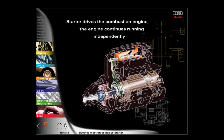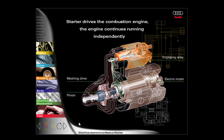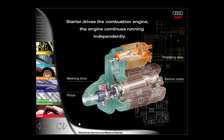The starter is the largest electrical consumer in a motor vehicle. Its task is to drive the combustion engine to such speeds that it is able to continue running independently. The starter withdraws the energy required to achieve this from the battery. The starter is predominantly comprised of an electric motor, an actuating relay and a meshing drive with a pinion. When the driver turns the ignition key, the actuating relay picks up, starting the starter motor and simultaneously moving the meshing drive. The pinion engages in the engine flywheel's ring gear and rotates it. When the engine starts, the one-way roller clutch withdraws the engaged pinion from the starter motor again.